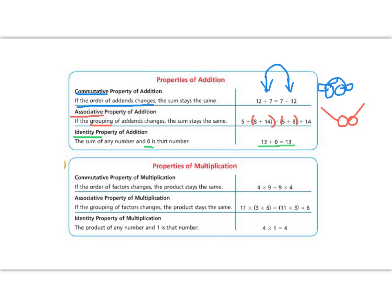Our next one down below are properties of multiplication. Multiplication and addition can be similar, but sometimes they have different rules. A property is like a rule. We also have the commutative property of multiplication. It's the same rule. It says that the order doesn't matter. Instead of multiplying 4 times 9, I can multiply 9 times 4. I flipped my two multiples, but my answer stays the same.